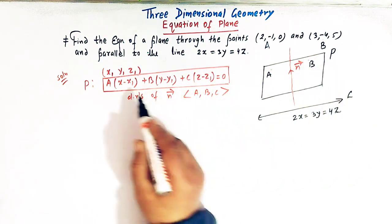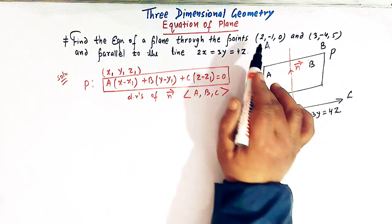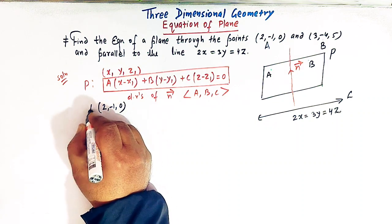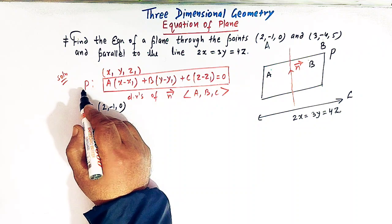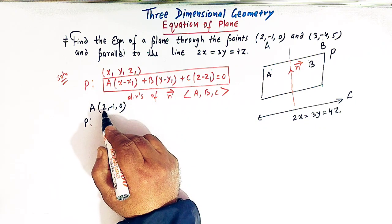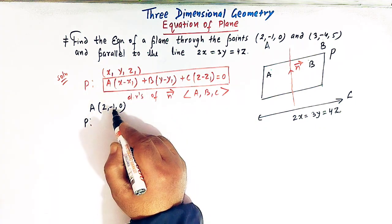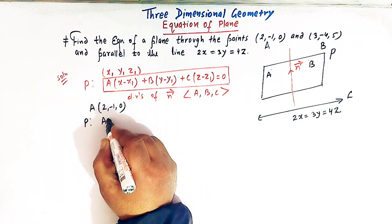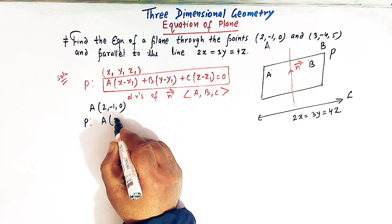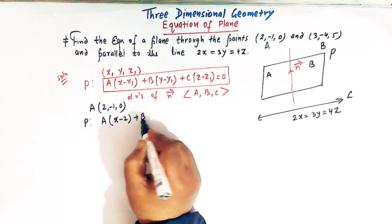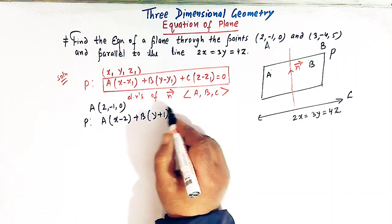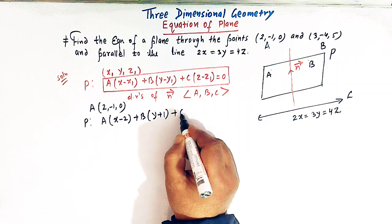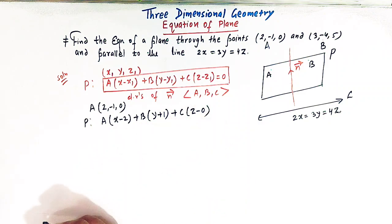This plane P passes through point A with coordinates (2, -1, 0). So the equation of plane P is obtained by substituting x1 = 2, y1 = -1, and z1 = 0, giving us A(x - 2) + B(y + 1) + C(z - 0) = 0.